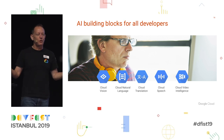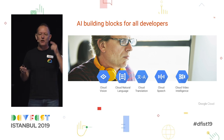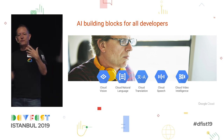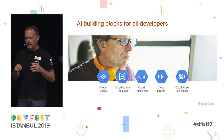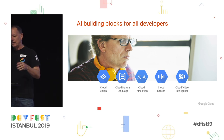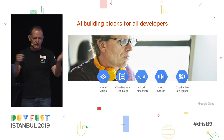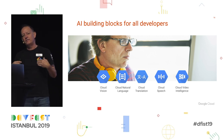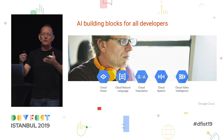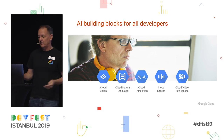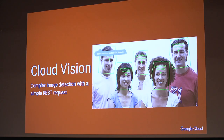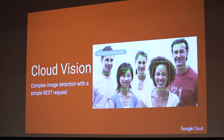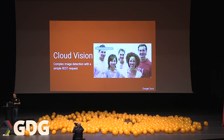Google provides a whole series of pre-trained models to do a variety of different things: vision for looking at images and trying to understand them; natural language for understanding speech; translation for translating text between two languages; speech for taking audio and extracting words so you can drop that into a database and make it searchable; and cloud video intelligence. We're going to do a quick walkthrough through a couple of these before I get to the main subject.